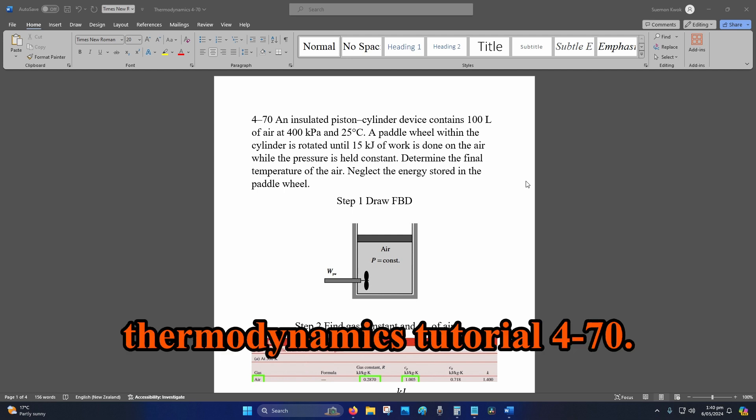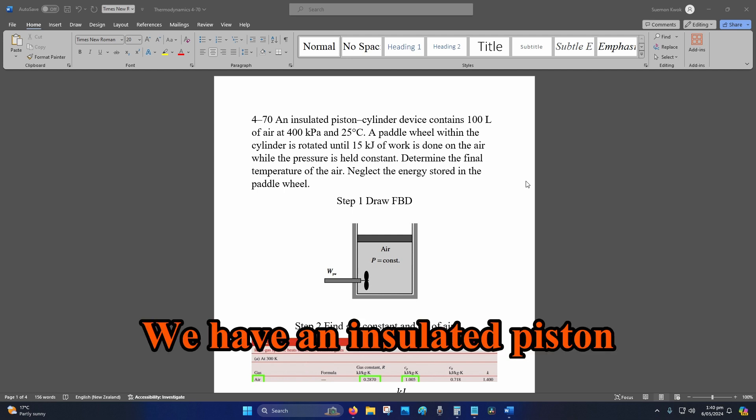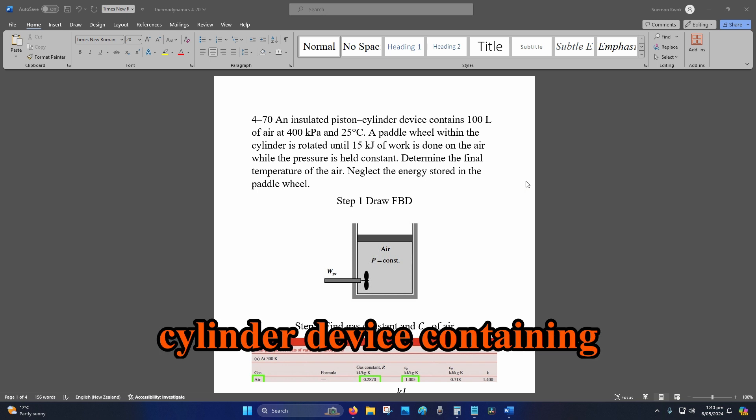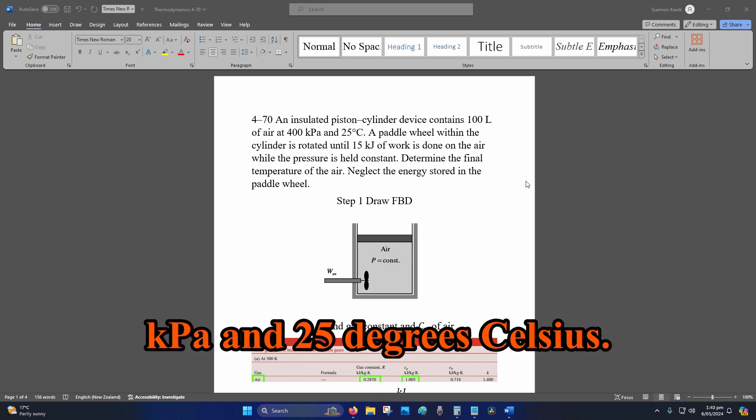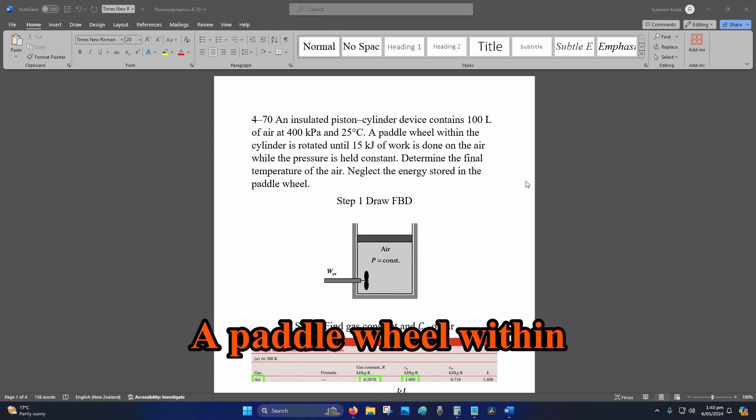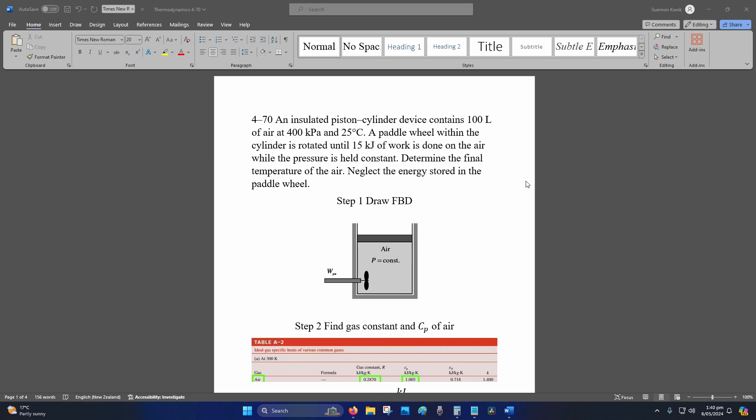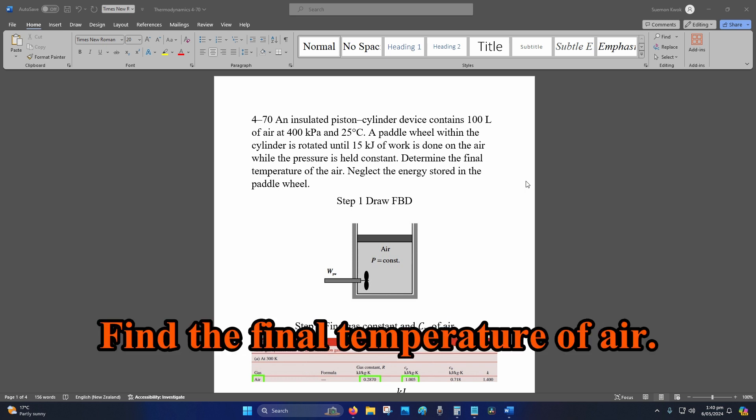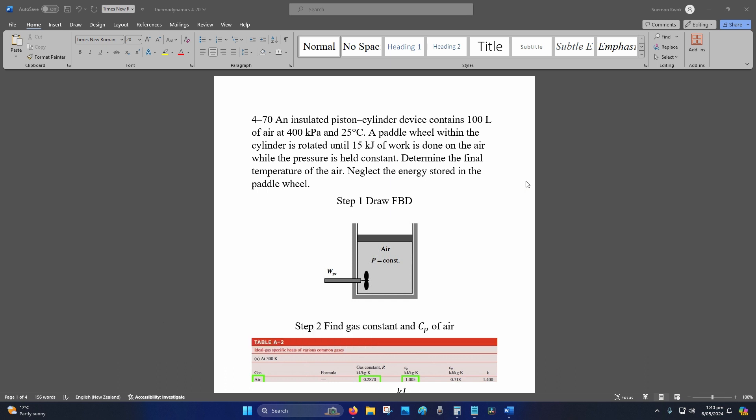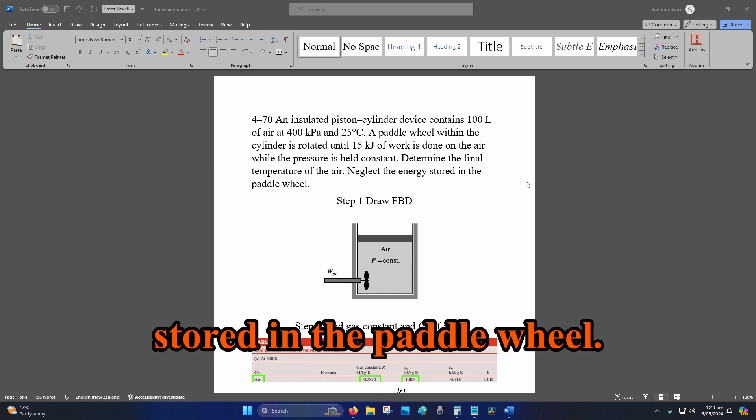Hey internet, welcome to Thermodynamics Tutorial 4-70. We have an insulated piston-cylinder device containing 100 liters of air at 400 kPa and 25 degrees Celsius. A paddle wheel within the cylinder is rotated until 15 kilojoules of work is done. Air pressure is held constant. Find the final temperature of air. Neglect any energy stored in the paddle wheel.